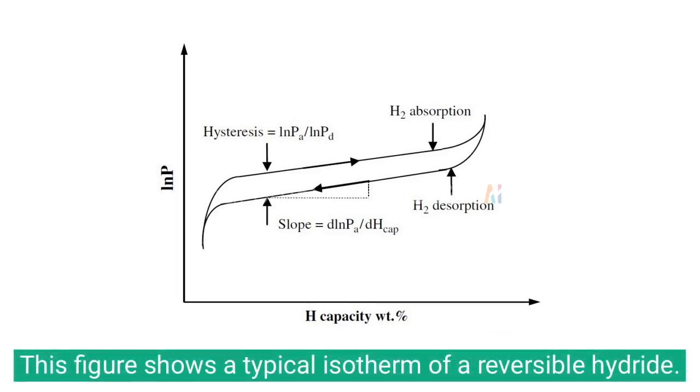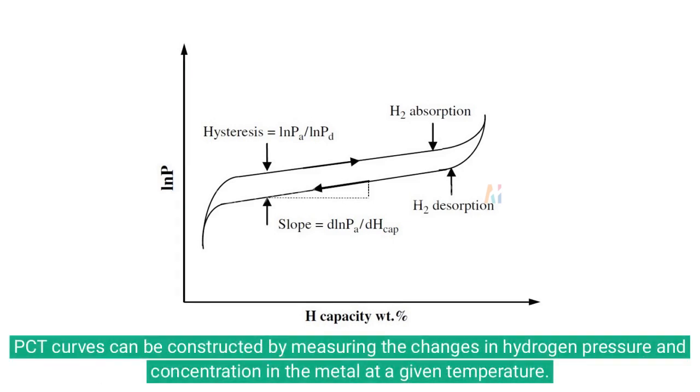This figure shows a typical isotherm of a reversible hydride. PCT curves can be constructed by measuring the changes in hydrogen pressure and concentration in the metal at a given temperature.